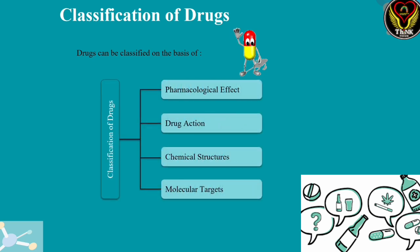We have four criteria for drug classification. Based on these criteria, we use PDCM. PDCM classifies drugs based on all four criteria: pharmacological effect, drug action, chemical structure, and molecular targets. This is the classification of drugs.